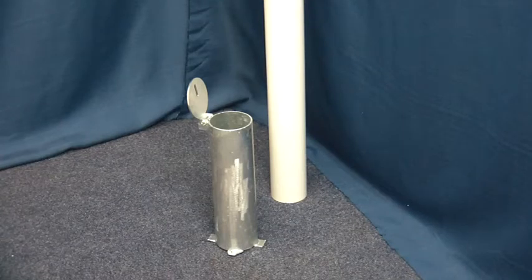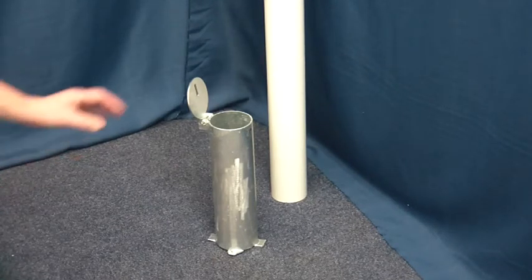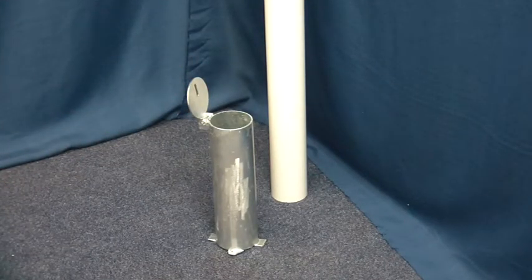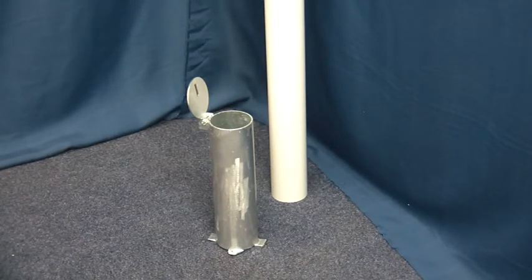The post is supplied with a 290mm deep ground spigot with a hinged lid. The spigot is fitted into the ground using cement or post mix, flush or just above ground level.